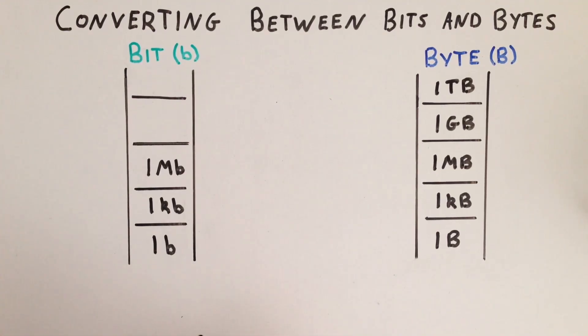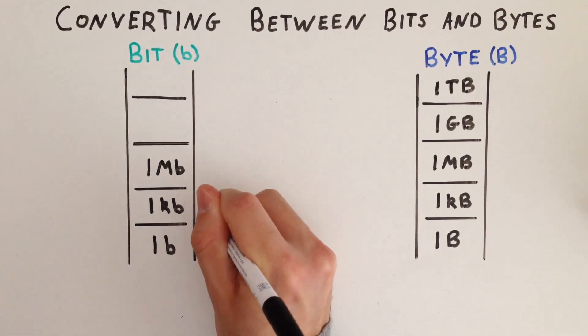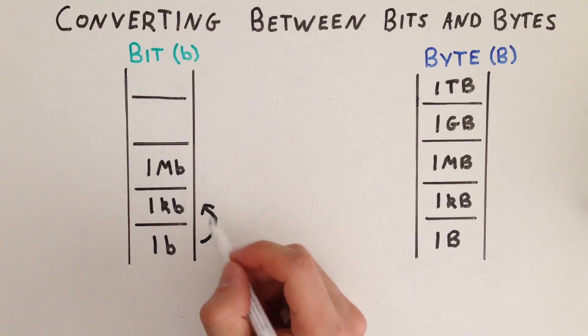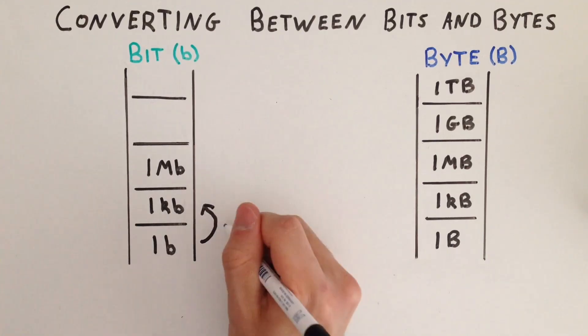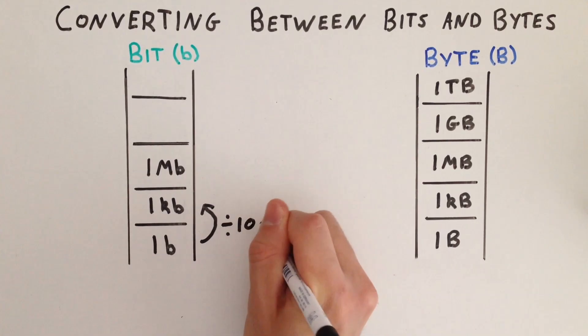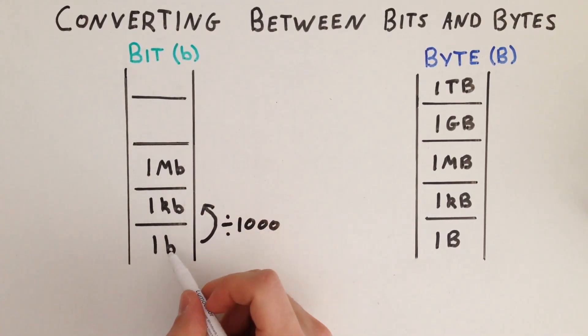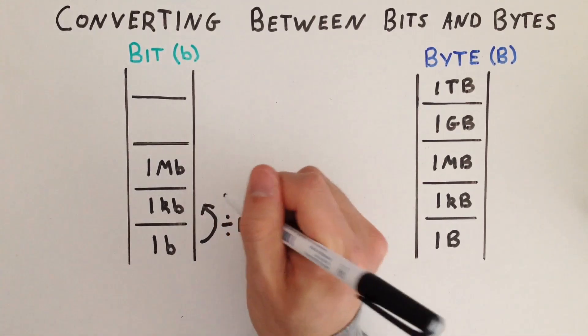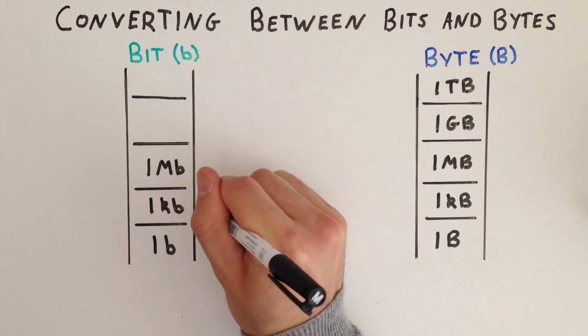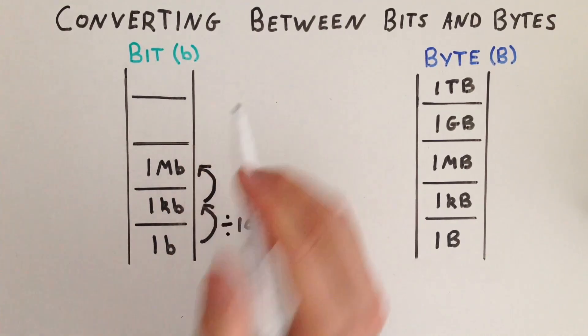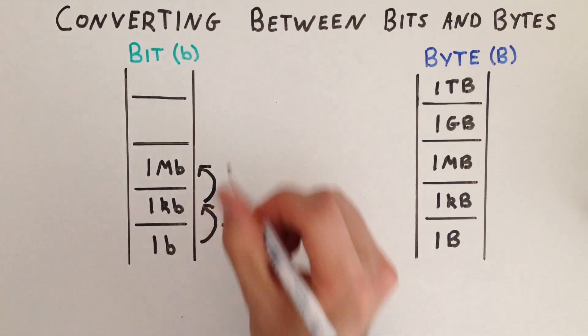Now we need some conversion factors. Let's go back to the bit ladder. The magic number to convert between these levels is 1,000. We just need to determine if we multiply or divide when changing between levels. If we want to go from a lower level to a higher level, if we want to climb up the ladder, we divide by 1,000 for each level. So 1 bit equals 1 divided by 1,000 kilobits. Again, if we want to go from kilobits to megabits, we divide by 1,000.